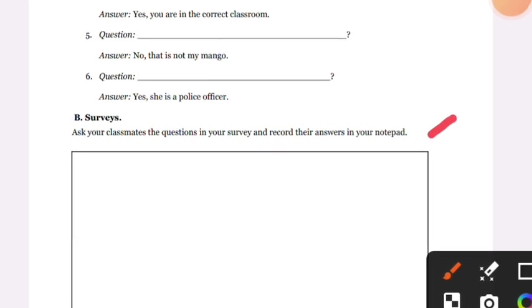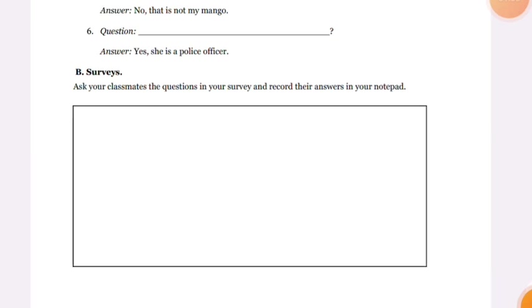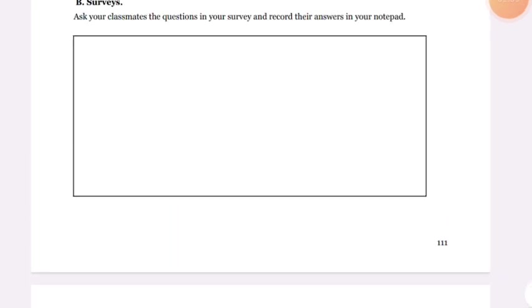Then the third thing is the survey part. In the survey part, there will be three groups that will be formed: first, second, and third group.